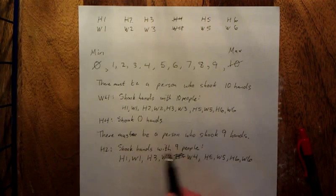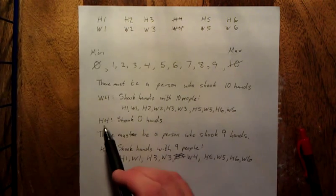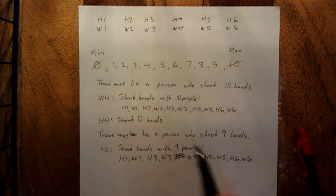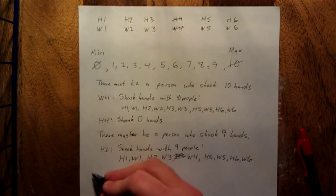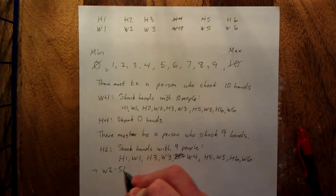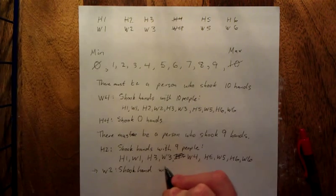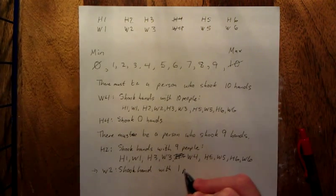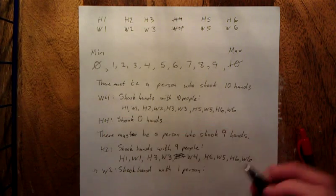So now at this point everybody at the party has shaken hands with two people except for husband four and husband two's partner, which would be wife number two. So we're allowed to conclude that wife two shook hands with one person, and that was the person from the last round, which was wife number four.